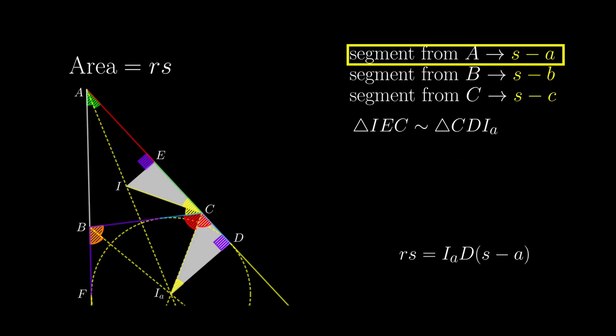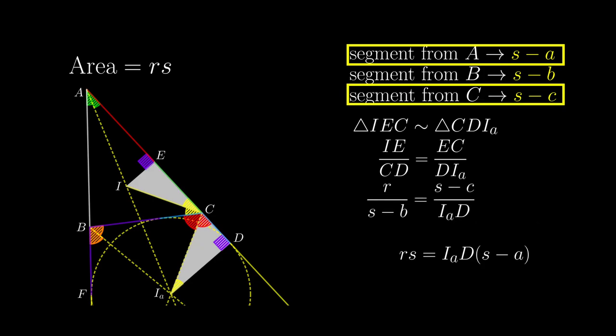Now we write down the proportionality of the sides, and use the results we have before, and we have this relation. Multiplying these two results we just concluded using similar triangles, then divide both sides by IAD, then multiply both sides by s, and again observe that the area is actually the square root of the right-hand side. And so we have again proved Heron's formula.